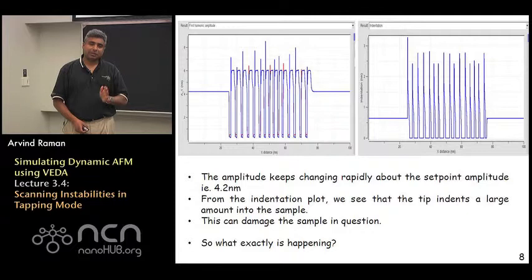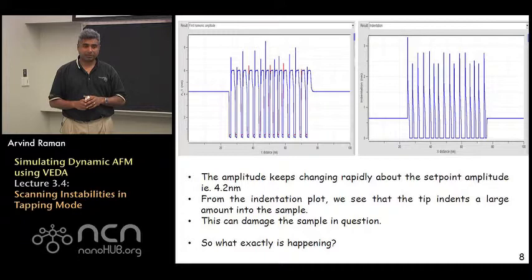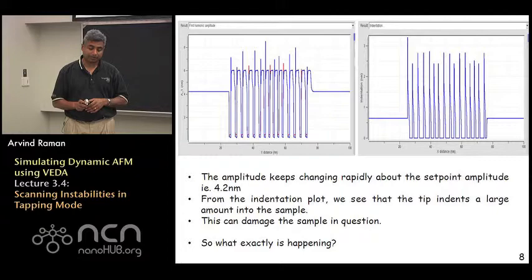The question is what is exactly happening? We have tried changing the integral gain and that did not seem to help us. What we might want to do in such a situation is to do another experiment. If the scanning experiment is not really working out and there are instabilities, we do not seem to figure out why it is happening. Our recommendation is always to go to a dynamic approach curve. What we would do now is go and choose the basic dynamic approach curves tool and perform with the same conditions an approach curve on the substrate material and another one on the feature material.